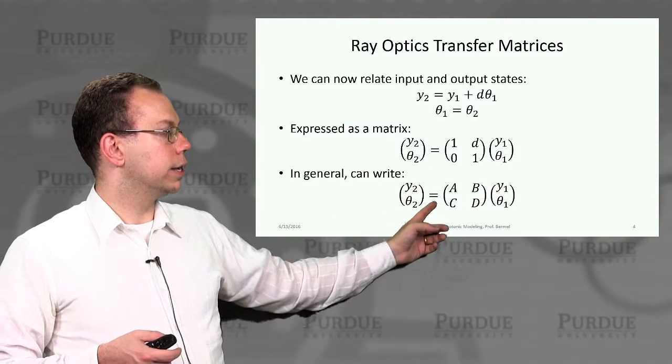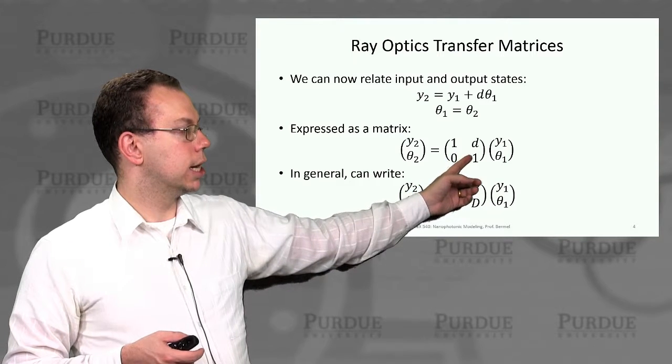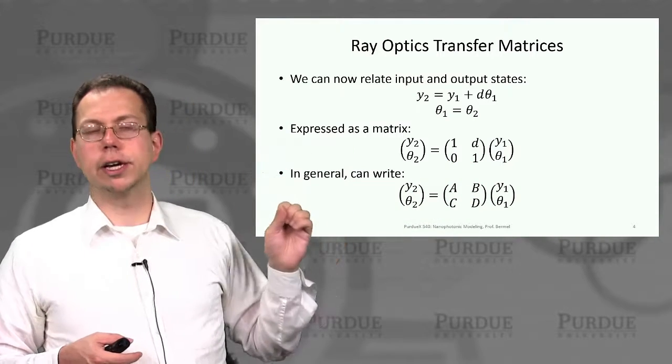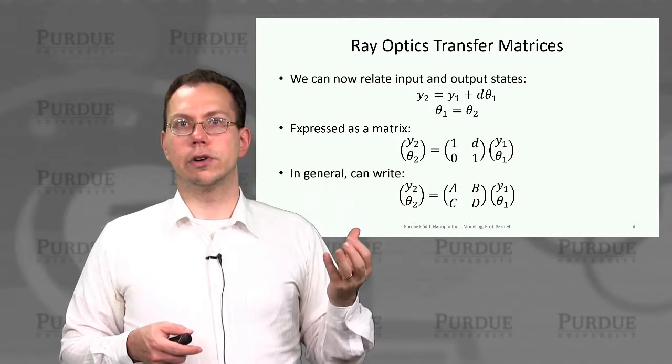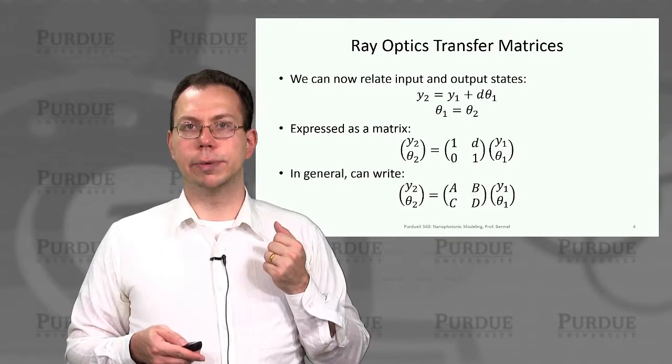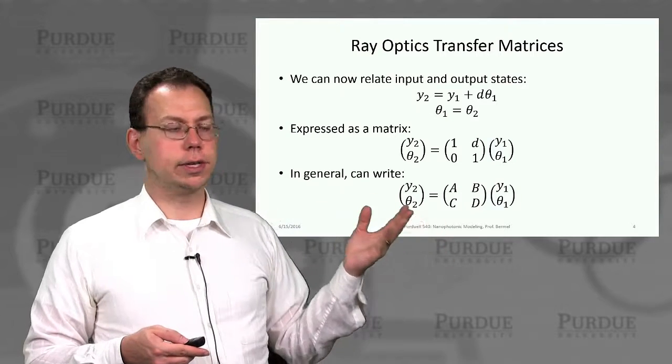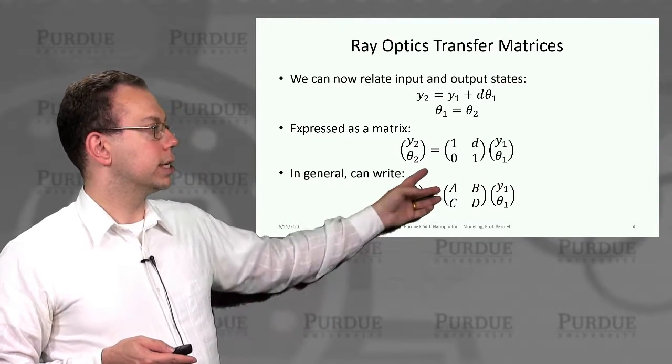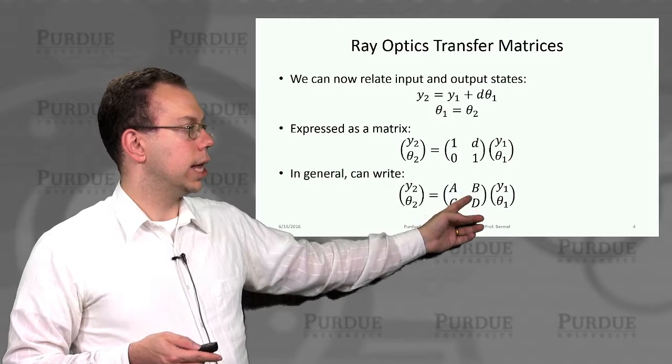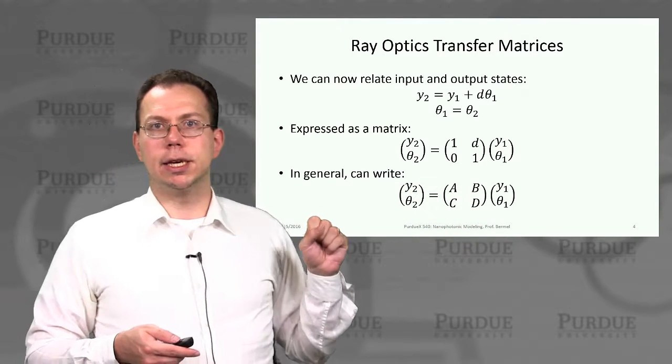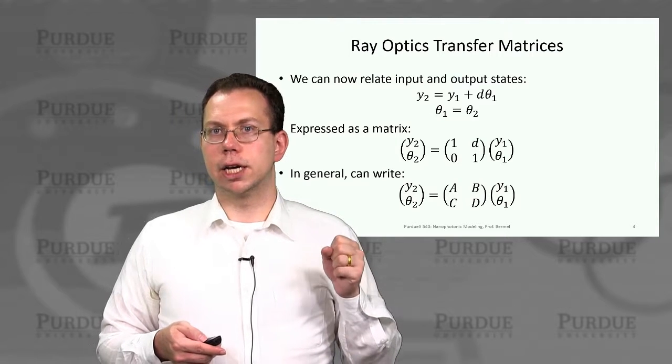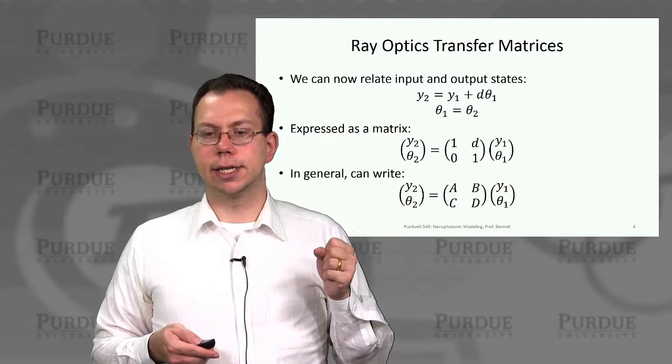In general, we write this matrix, which in this particular case was (1, d; 0, 1), as (a, b; c, d). Those a, b, c, d are unknown coefficients that depend on the optical element of interest. For free space, we'd put a and d equal to 1 and c equal to 0, but b would be a variable number based on the distance of propagation.